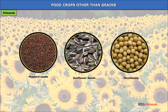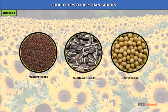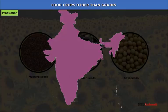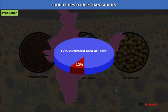Oil seeds: Oil seeds are an important group of commercial crops. Oil is an essential fat content in human diet. Oil cake serves as cattle feed. Non-edible oils are used for making medicines, varnishes, perfumes, candles, soaps and lubricants. India is the largest producer of oil seeds in the world and has the largest area under oil seed cultivation, covering about 12% of cultivated area of India.